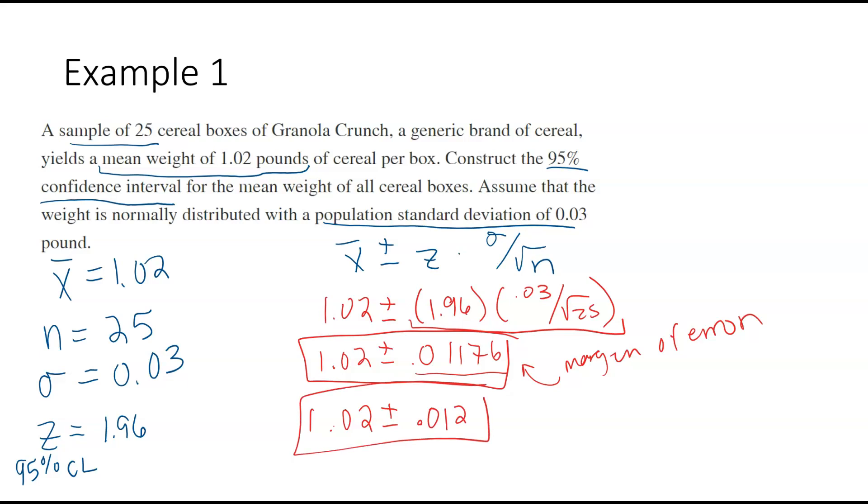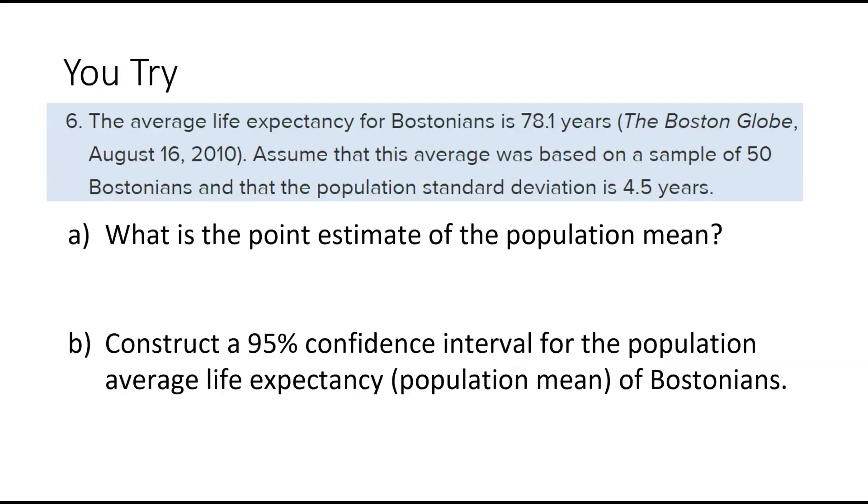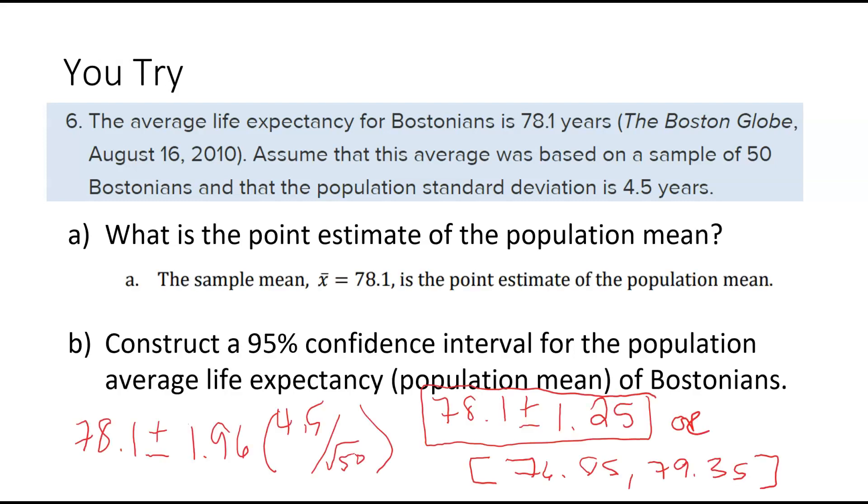You can also say with 95% confidence, if they want you to interpret it, that the mean weight of all cereals falls between, and then we would add. So we would do the subtraction first to get our lower limit. When we subtract those, we get 1.008. And to get the upper limit, we would add that, and we would get 1.032. If you'd like to read that or see it written out, there you go. Go ahead and give this one a try. Press play when you're ready to see the solution.